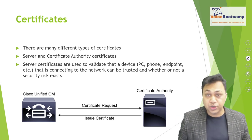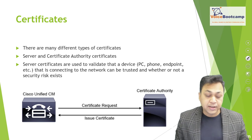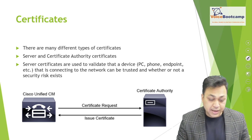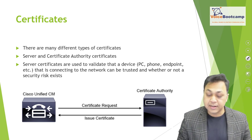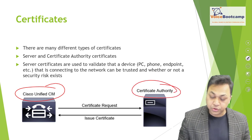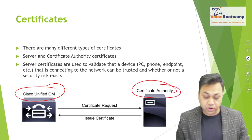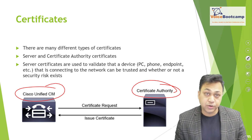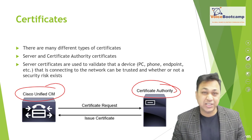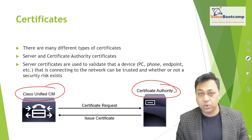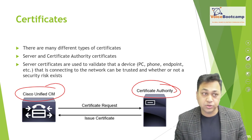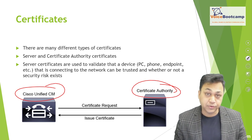There are many different types of certificates. You have server certificates and certificate authority certificates. Server certificates are used to validate a device — whether it's a PC, phone, or endpoint connecting to the network. A Certificate Authority server issues a certificate for the Call Manager. By requesting a certificate, the issuing server — either public or private — issues a certificate matching the Call Manager's identity.